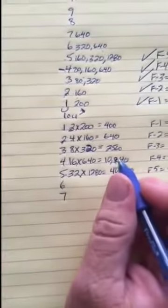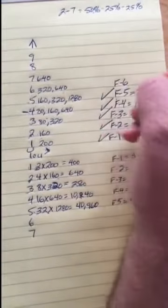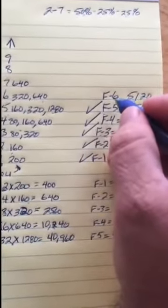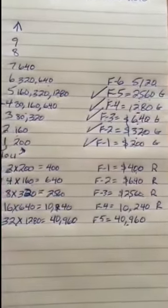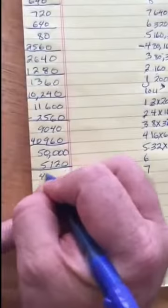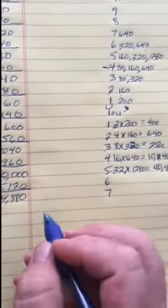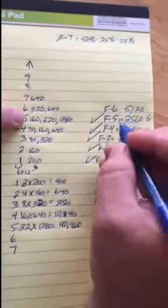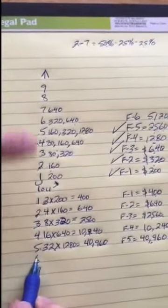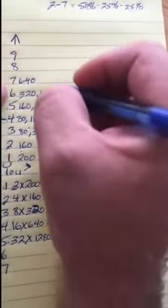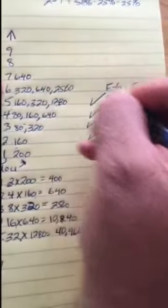Floor six: double twenty-five sixty is fifty-one twenty. Subtract fifty-one twenty from fifty thousand, leaving forty-four thousand eight hundred and eighty in your project fund. Floor six is now funded. Distribute the fifty-one twenty at fifty/twenty-five/twenty-five: fifty percent of fifty-one twenty is twenty-five sixty going to the target, twelve eighty to the next person, and twelve eighty to the person above them.